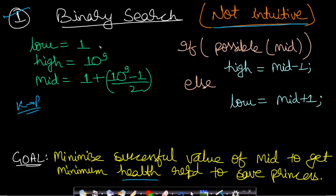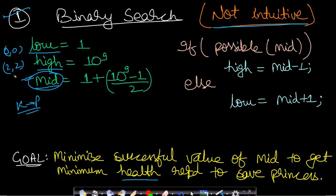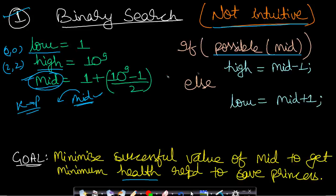The range of health values is unbounded higher, but since it's an integer, the highest value is within integer max range. We take low = 1 and high = 10^9. We find mid = low + (high - low) / 2. Using this health value, we check if there exists a path from 0,0 to the princess at 2,2. If it is possible, there might be lower health values that also work, so we want to minimize.